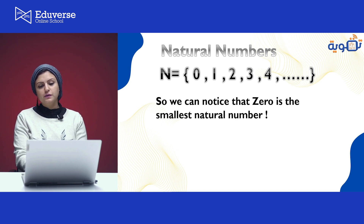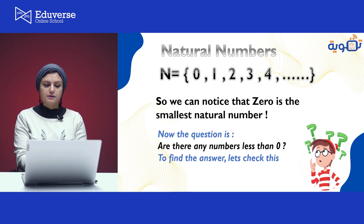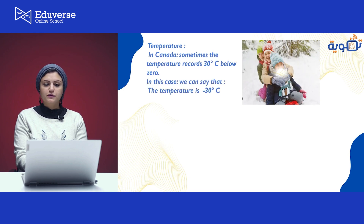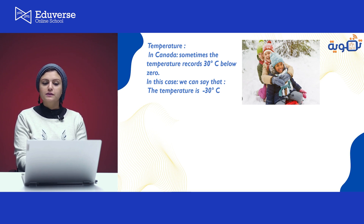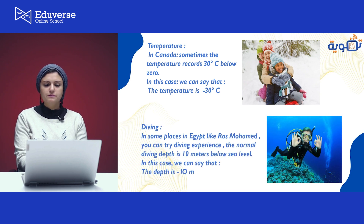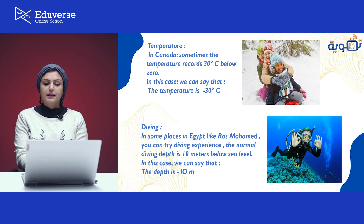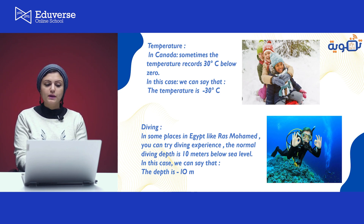We can notice that zero is the smallest natural number. Now the question is, are there any numbers less than zero? To find the answer, let's check this. Look at this photo of kids playing in the ice. In Canada, sometimes the temperature records 30 degrees Celsius below zero. In this case, we can say that the temperature is minus 30 degrees Celsius. Also, check this guy under the water — he's diving. In some places in Egypt, like Ras Mohamed, you can try a diving experience. The normal diving depth is 10 meters below the sea level. The sea level is the zero level. So in this case, we can say that the depth is minus 10 meters because it's under the water.